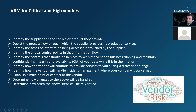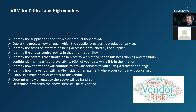For high-risk vendors, we identify the supplier and the service or product they provide — for example, Microsoft supplying Azure subscriptions. We map the process flow through which the supplier provides its product or service, and identify the types of information accessed or touched by the supplier, which determines criticality. If the supplier is dealing with your customer or employee data, the risk is going to be high. You also need to identify the critical control points in the information flow and the controls that should be in place to maintain confidentiality, integrity, and availability.